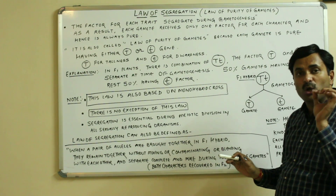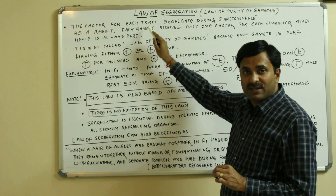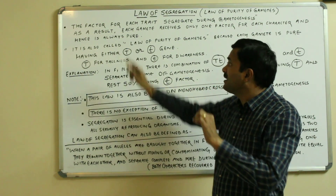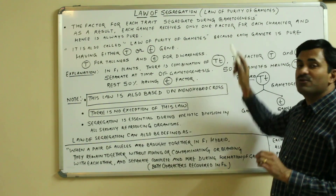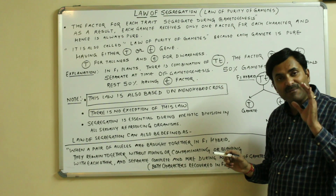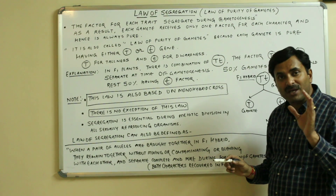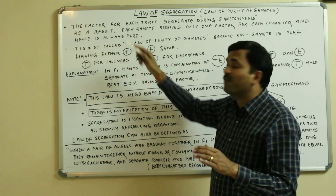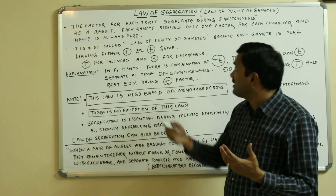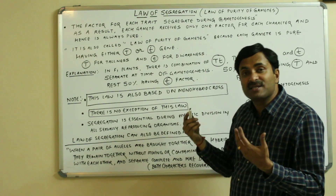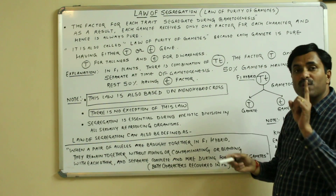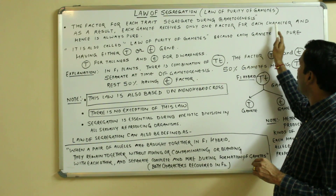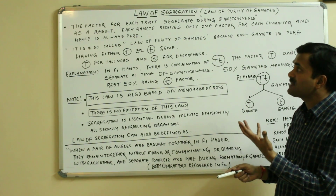Now what does the law say? The factor for each trait — meaning the gene for each character — segregates during gametogenesis, which means gamete formation. This law states that at the time of gametogenesis, the factor for each trait segregates. As a result, each gamete receives only one factor for each character, and hence it will always be pure.